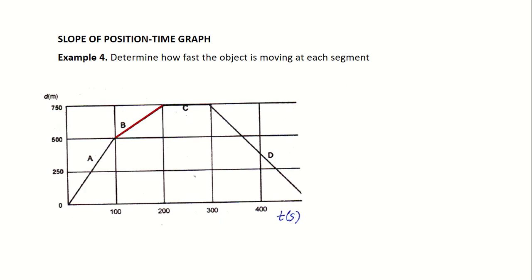At point B, that happened for 100 seconds as well. Galing akong 500, pumunta ako ng 750. So, my change in position is 250, right? So, 250 over 100, that's 2.5 meter per second.